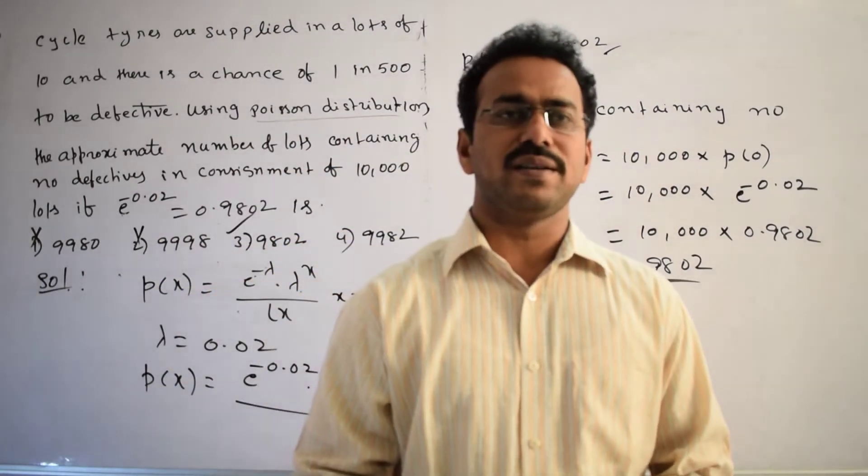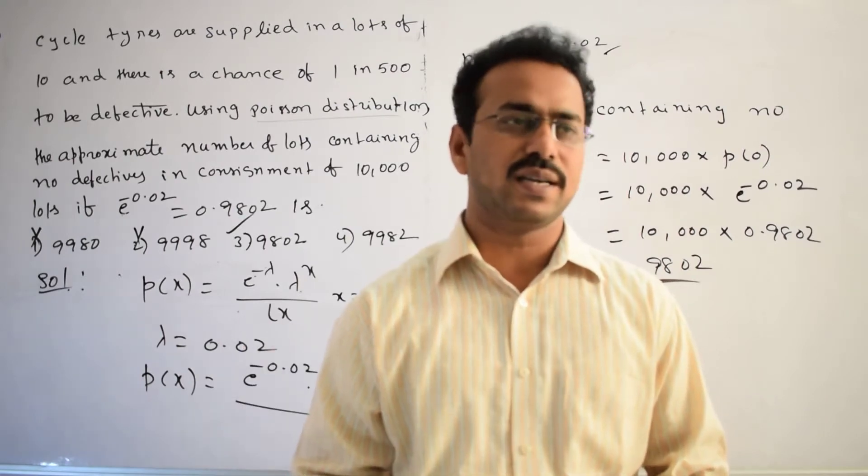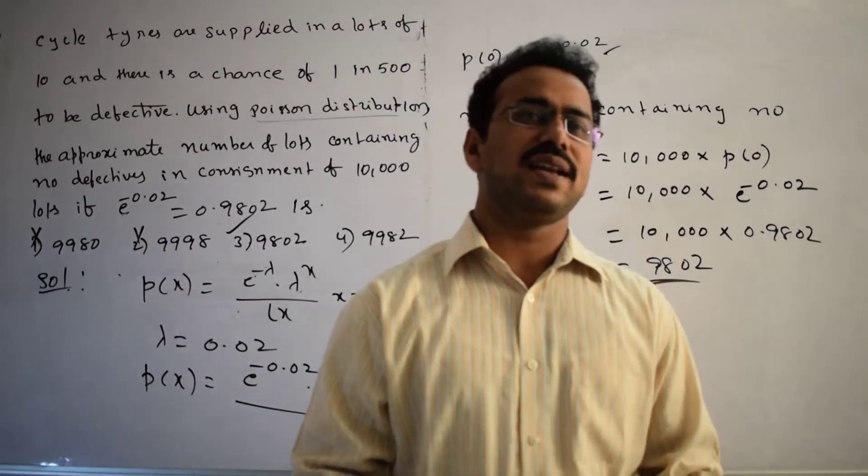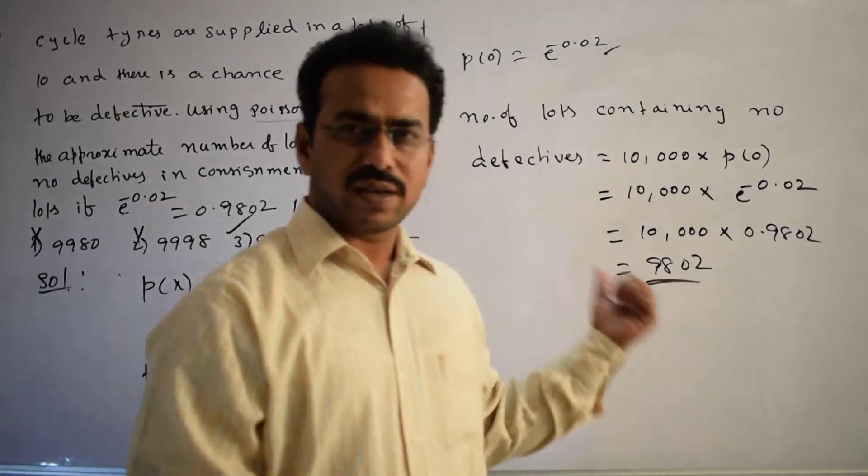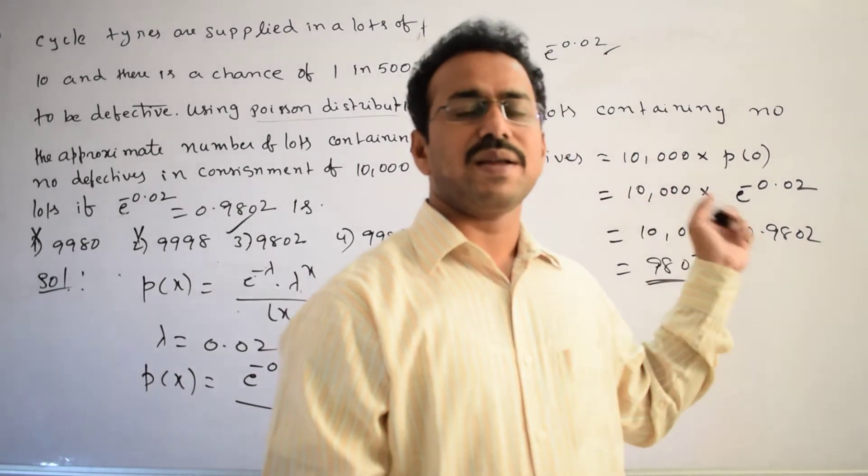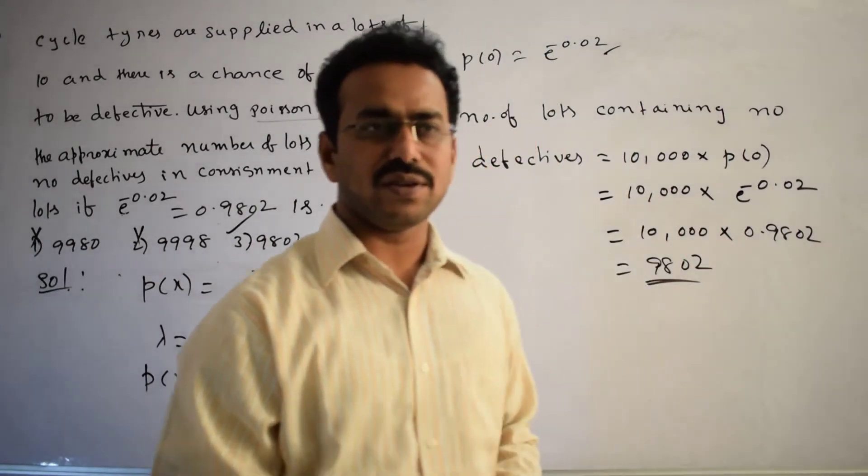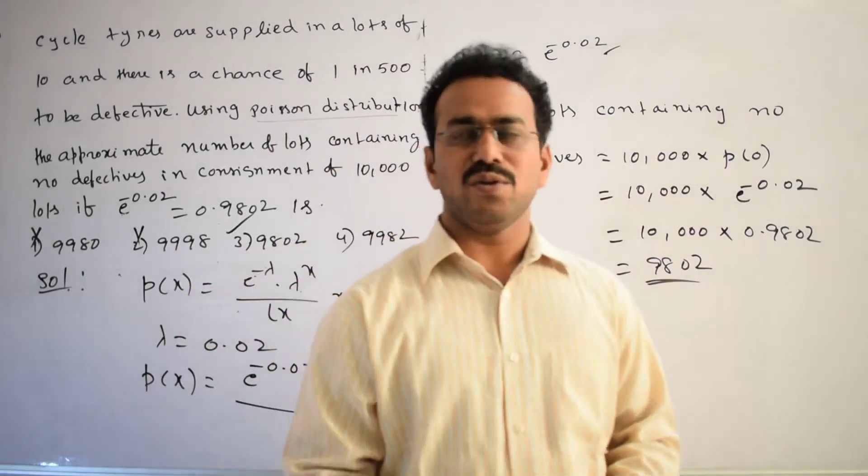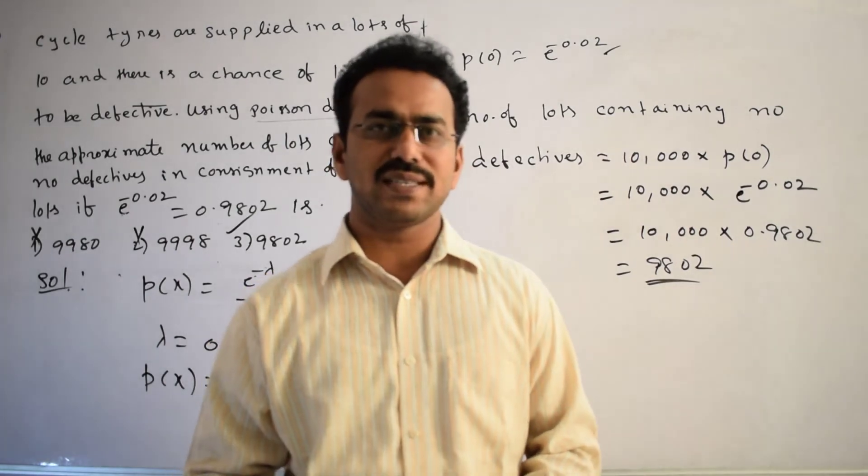So what is the process we applied? Simply, whenever you are facing these types of questions, first you should think about the parameter lambda value and then x value. If P(x) equals 0, almost the problem is going to finish in a fraction of moments, means in seconds only. This is the only logic you have to remember. Don't read the entire question and don't waste time. They will give only one or two minutes in competitive exams.